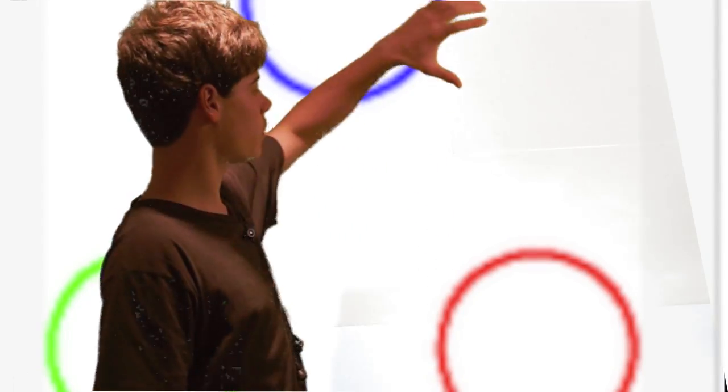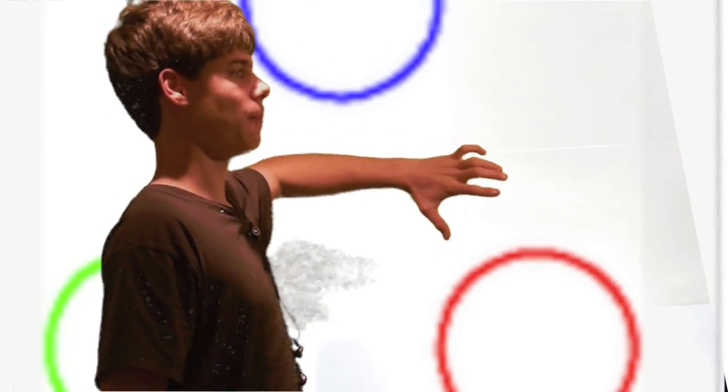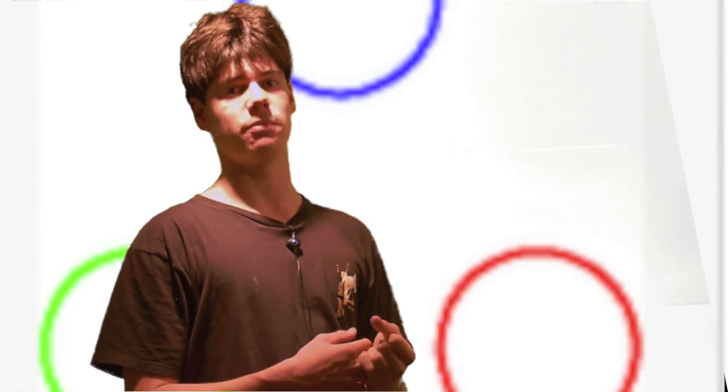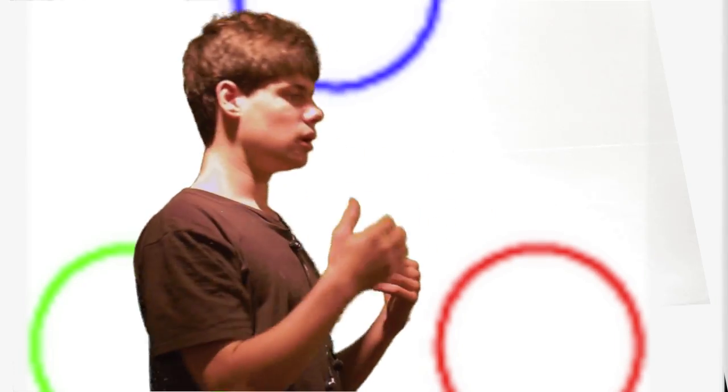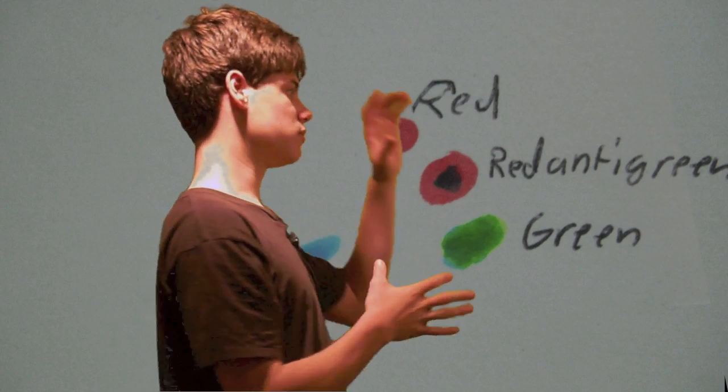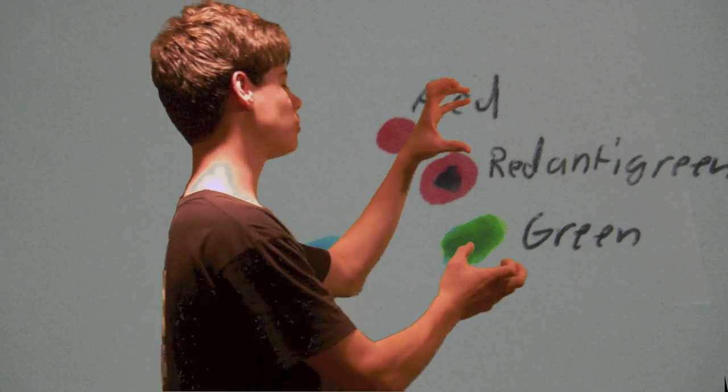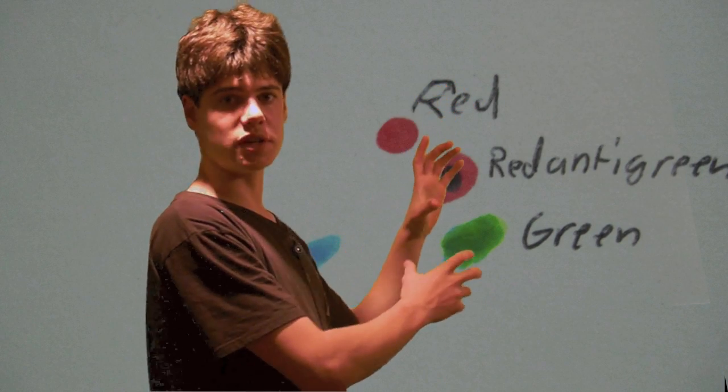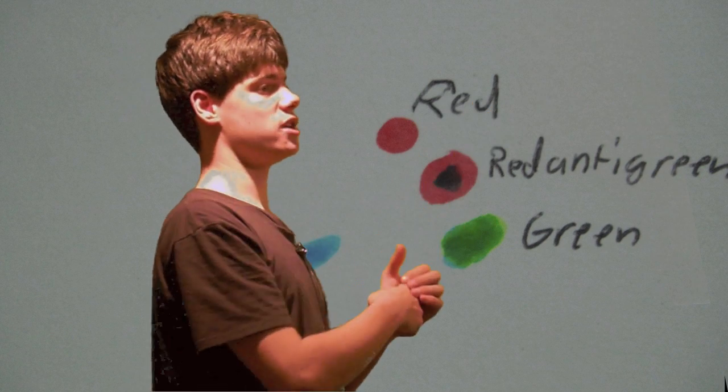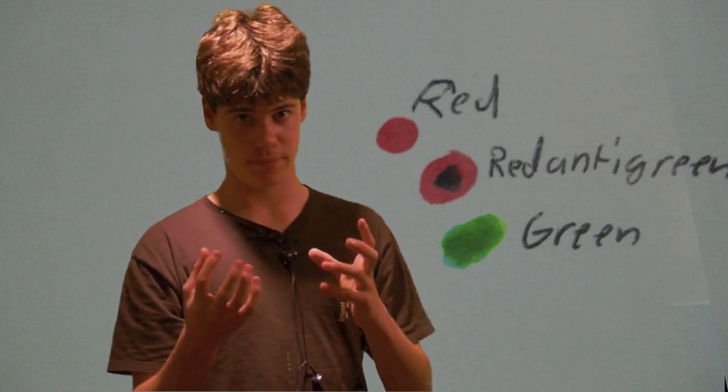So what's going to happen is, say we'll just focus on the red and the green for now. So say the green, these are taken from Wikipedia by the way, these images. So say the green quark, what it's going to do is it's going to emit a gluon. So what's going to happen is the red quark is going to couple to the green quark. And the way it's going to do this is it's going to emit a gluon that is red anti-green.